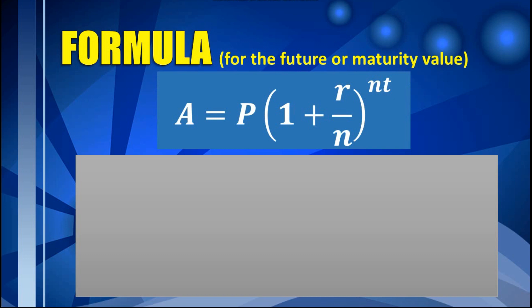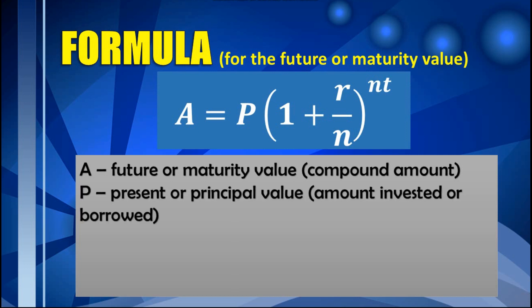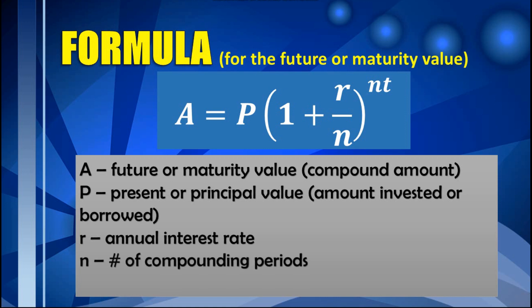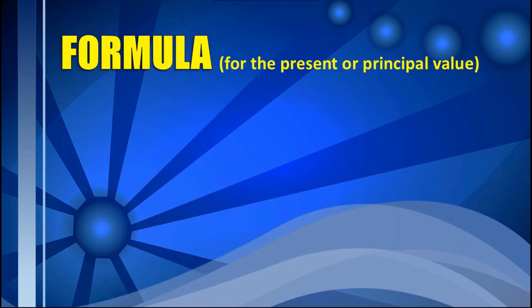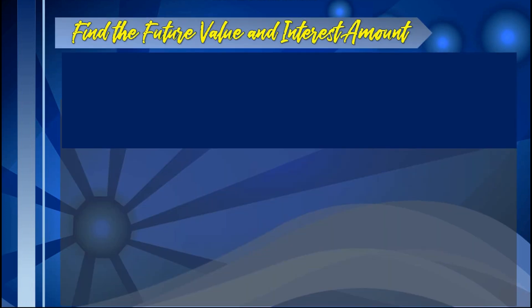The formula is: A = P × (1 + R/N)^(N×T). Here, A stands for the future or maturity value, also called the compound amount. P represents the present or principal value — the amount invested or borrowed. R refers to the annual interest rate, N is the number of compounding periods per year (annually, monthly, quarterly, etc.), and T refers to the number of years. To find the present or principal value, use: P = A ÷ (1 + R/N)^(N×T).